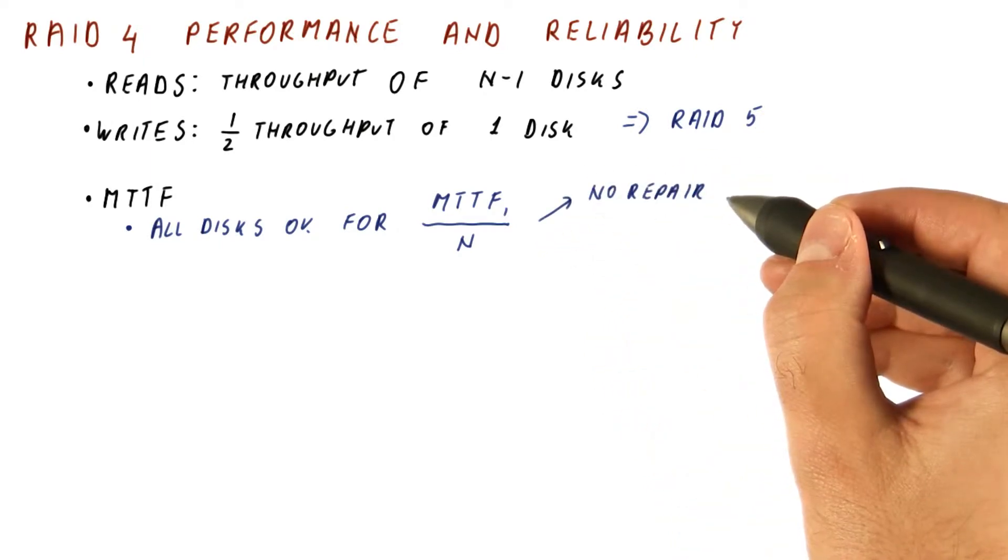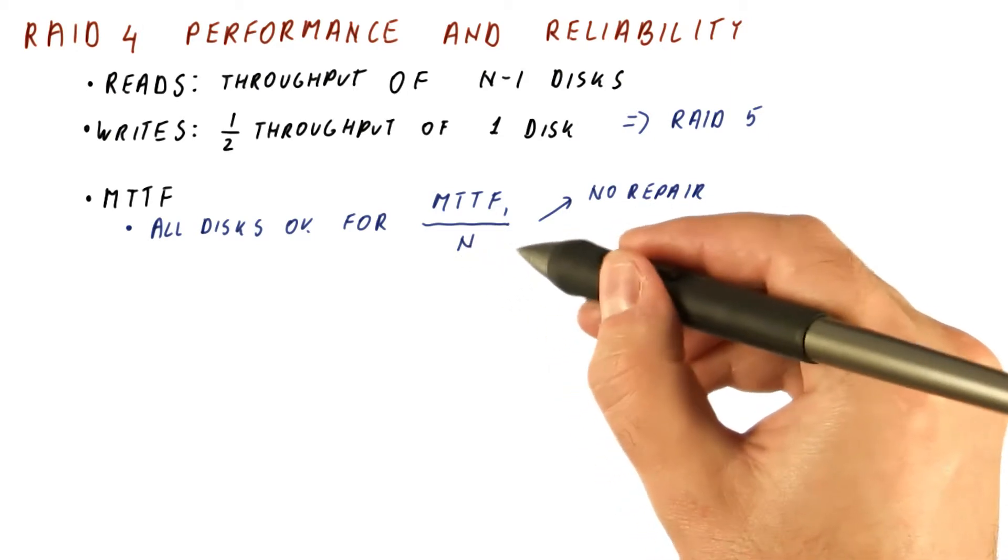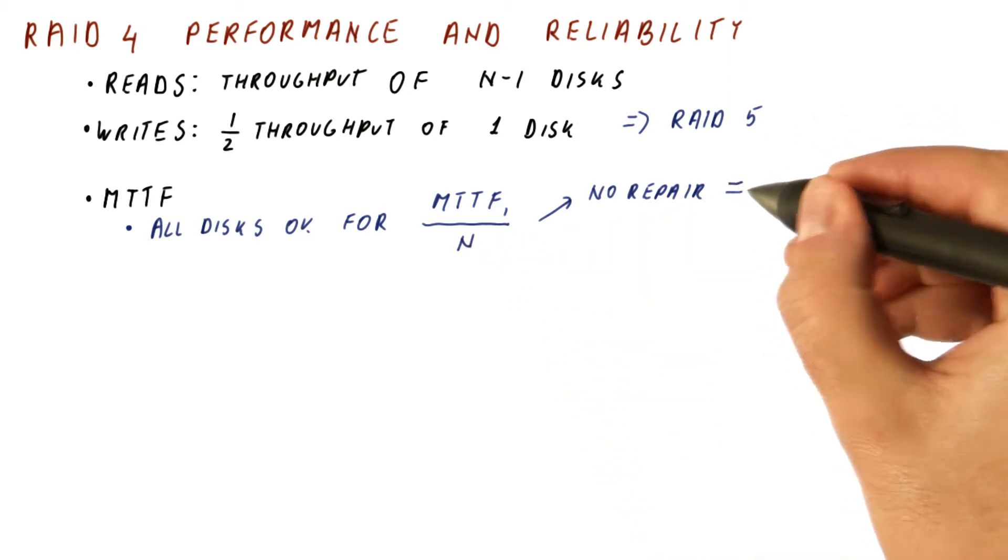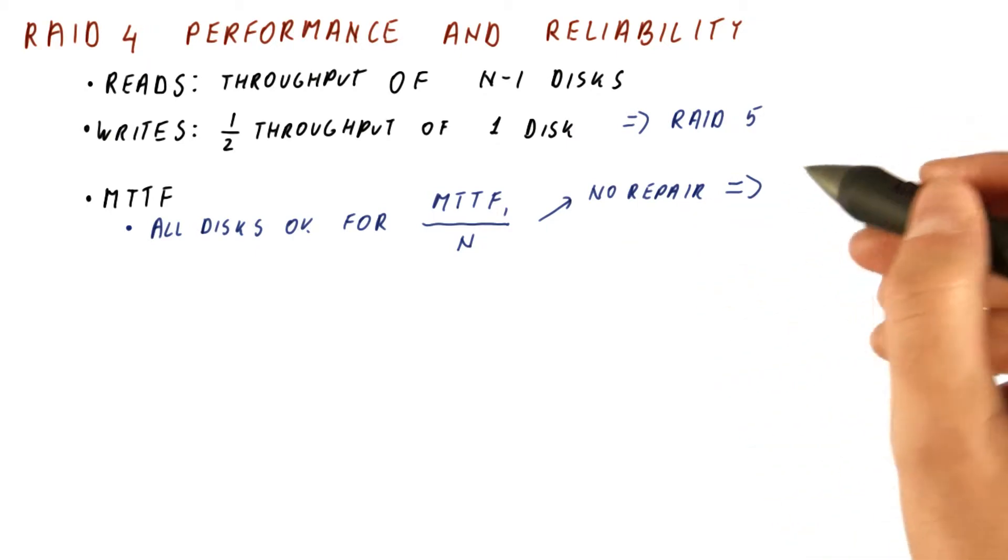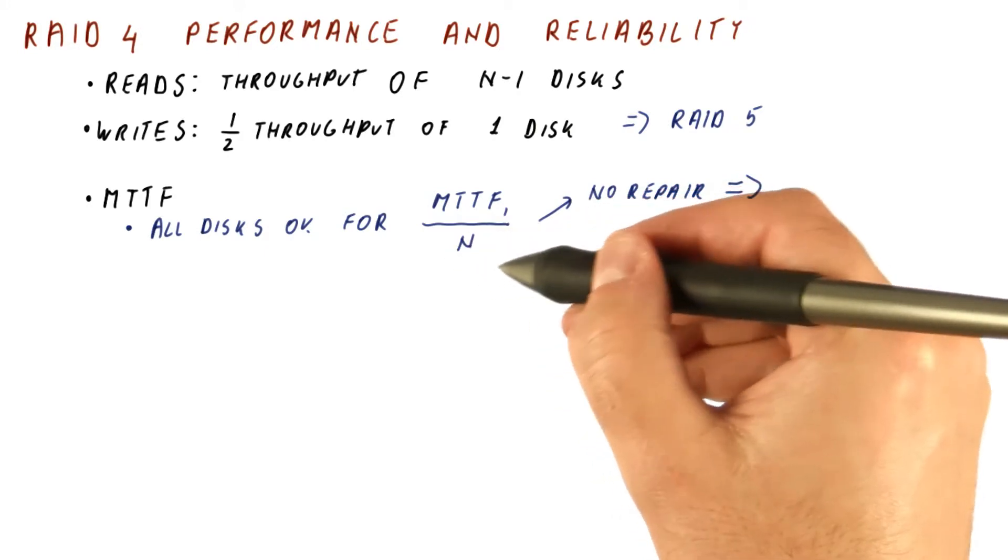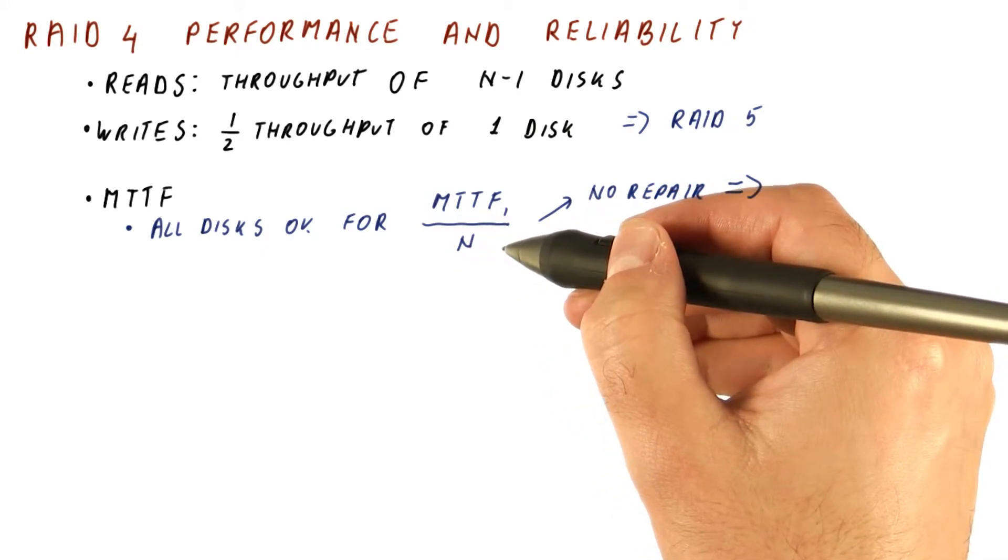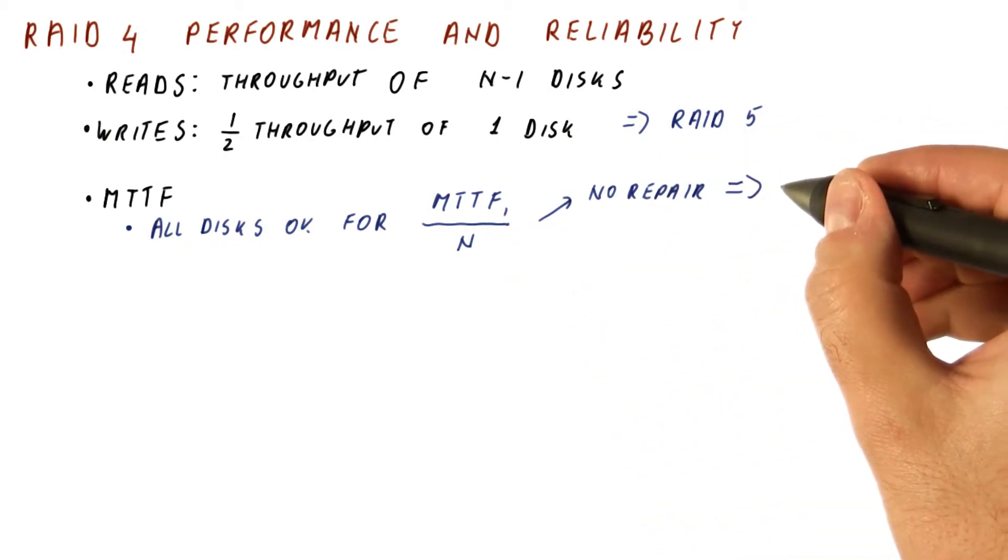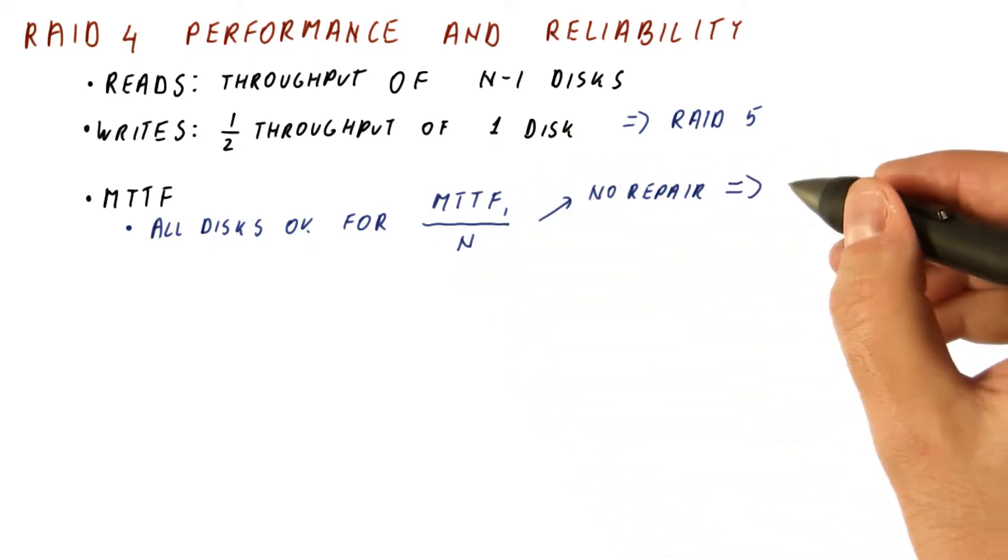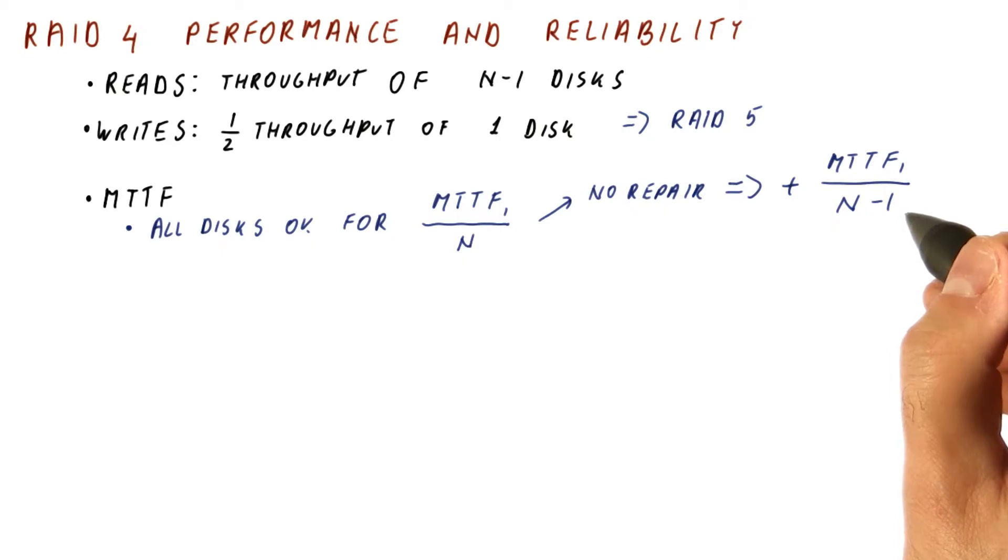If we do no repair of the failed disk, then we are operating with n minus 1 good disks. At the point of the first failure, we are left with an n minus 1 disk array, and any disk failure in that array is going to result in data loss. So if we don't do repair, then to this we add the expected time until the first failure among the n minus 1 disks that we still have.